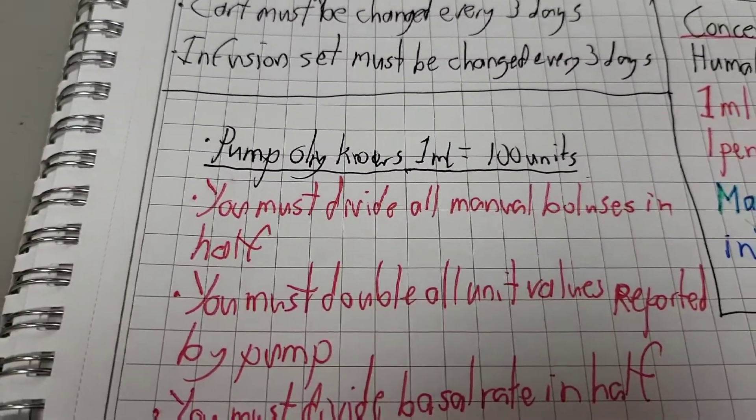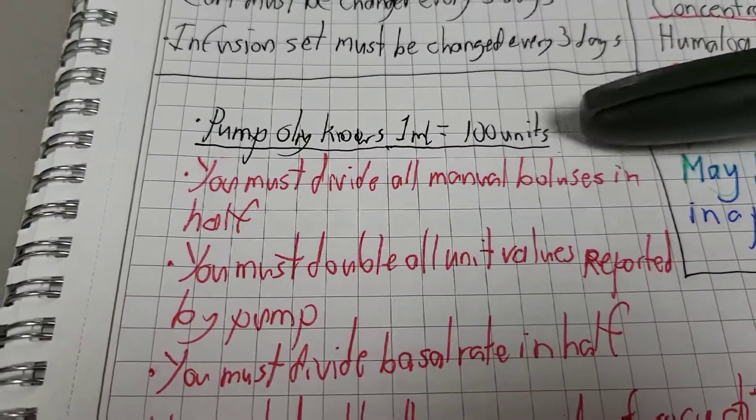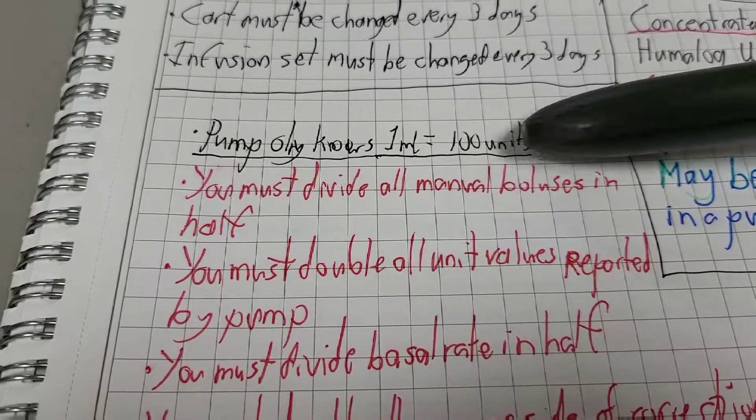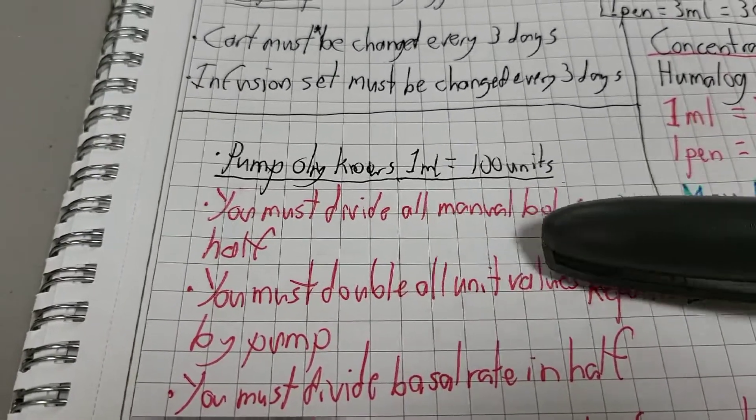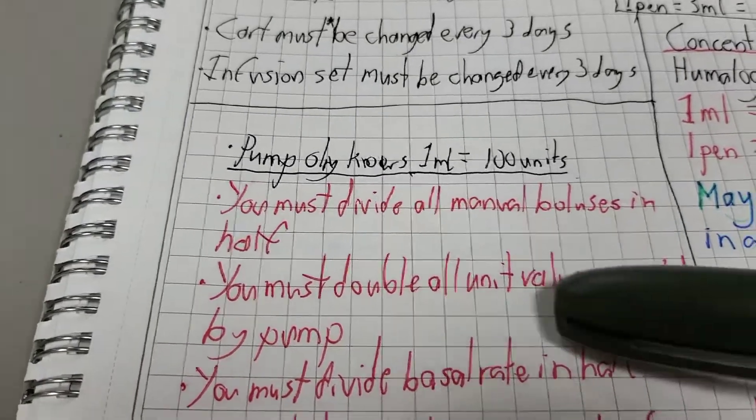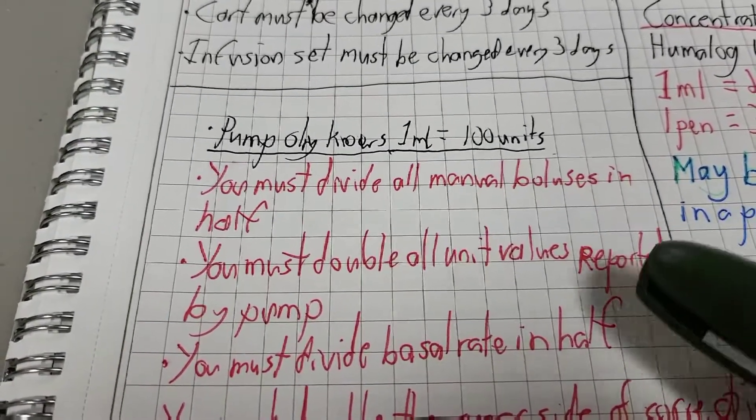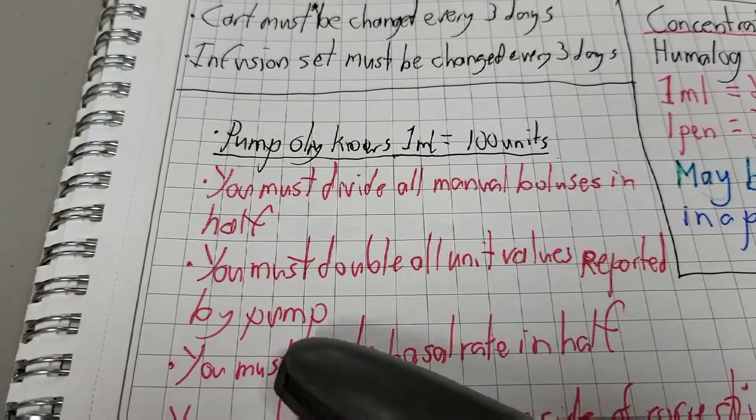So the caveats to using U200 in a pump. You have to remember that pumps only know about U100. Any manual boluses you perform, you have to divide in half. On the flip side, when you are viewing the data in the pump, all the unit values reported, you have to double.